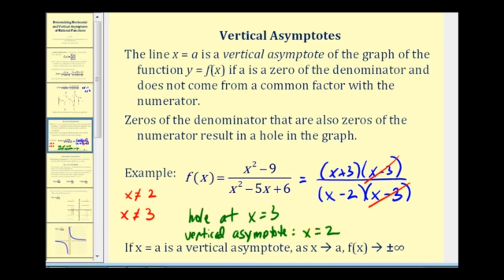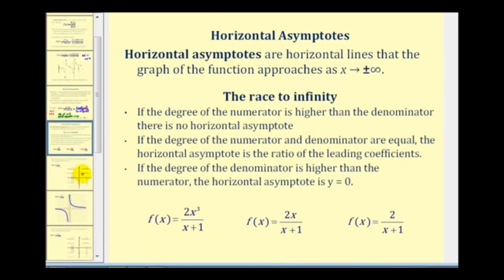If x equals a is a vertical asymptote, as x approaches the value of a, f of x or y approaches either positive infinity or negative infinity — meaning the graph will go up indefinitely or down indefinitely as it approaches a vertical asymptote. Now let's talk about horizontal asymptotes.